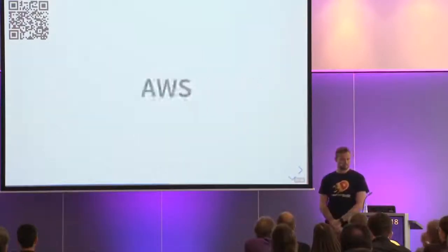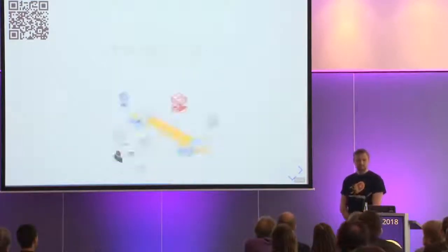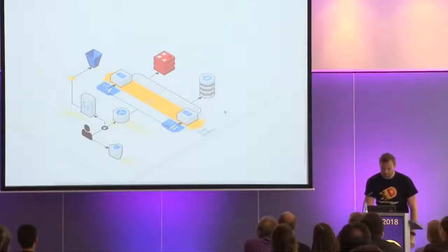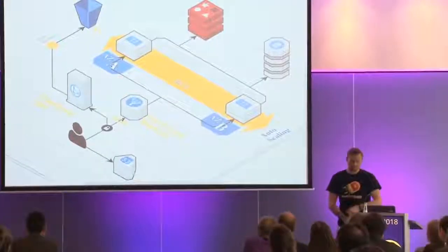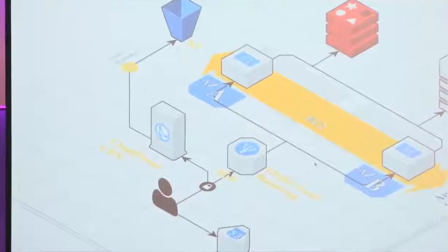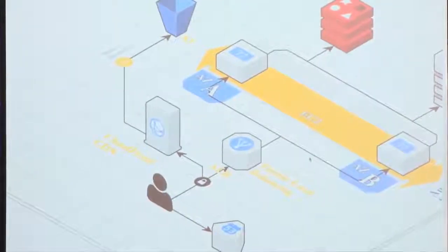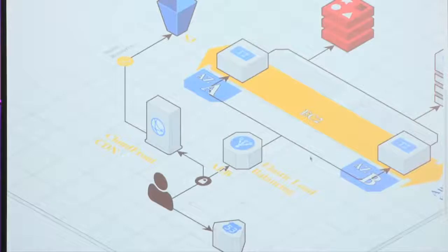Let's talk about AWS. Here's the architecture schema. From the user's perspective: first, DNS lookup happens in Route 53, which differentiates between calls to the static frontend content and API calls to the backend. Static frontend content is routed to the CloudFront CDN so users get data from the closest data center possible.